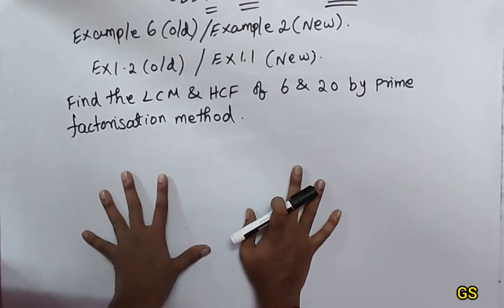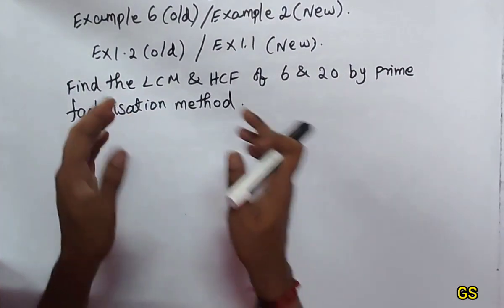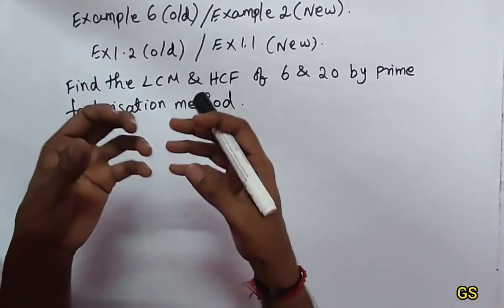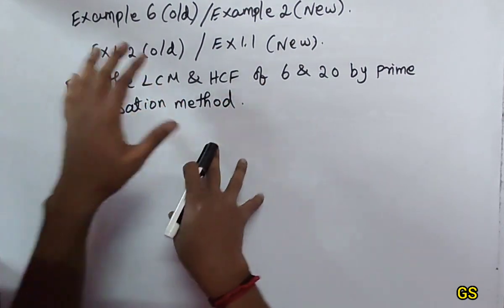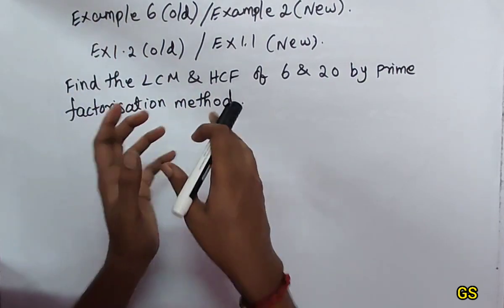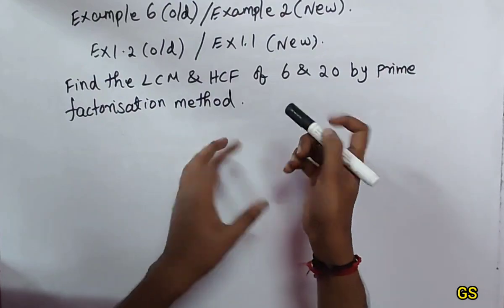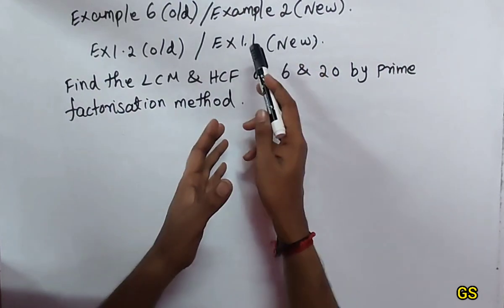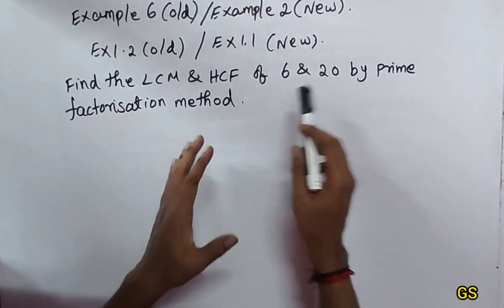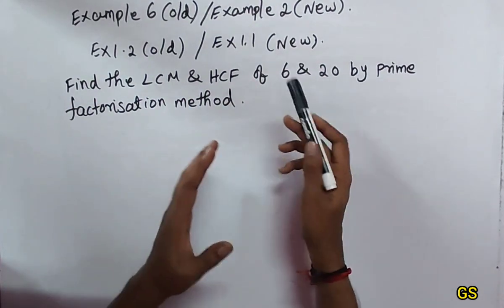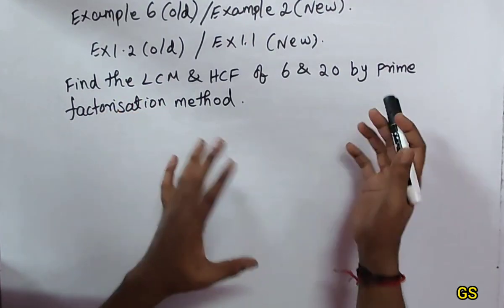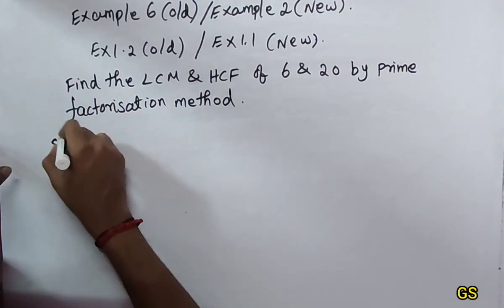Hi friends, welcome to CBSE Class 10 Math, Exercise 1.2. In old edition textbooks this is Exercise 1.2, example 3. In new edition textbooks it is Exercise 1.1, example 2. We will find the LCM and HCF of 6 and 20 using the prime factorization method.